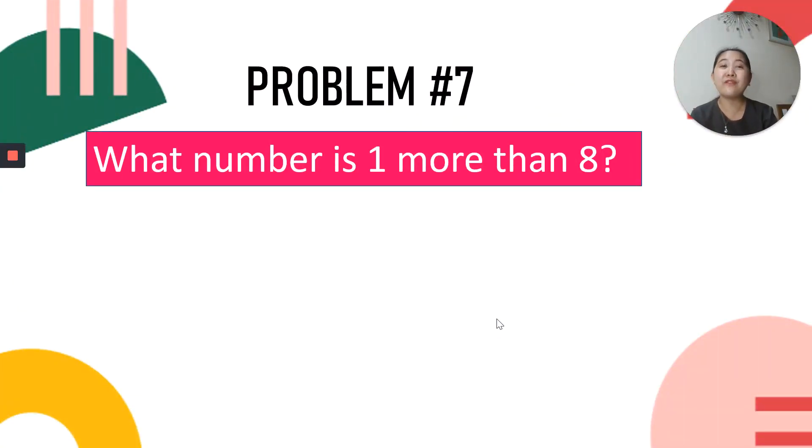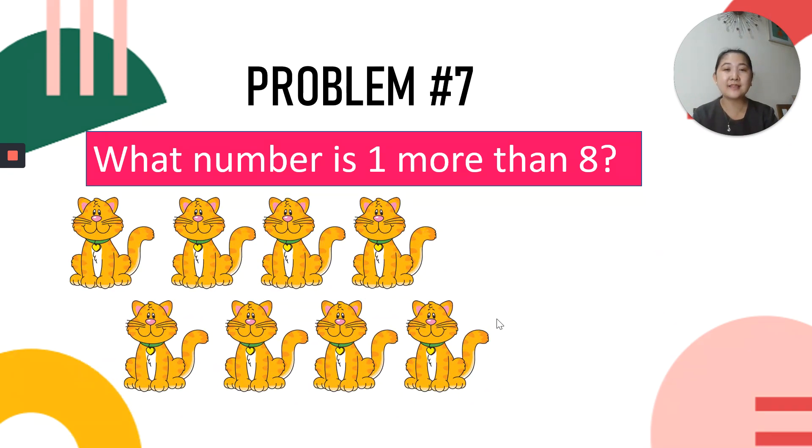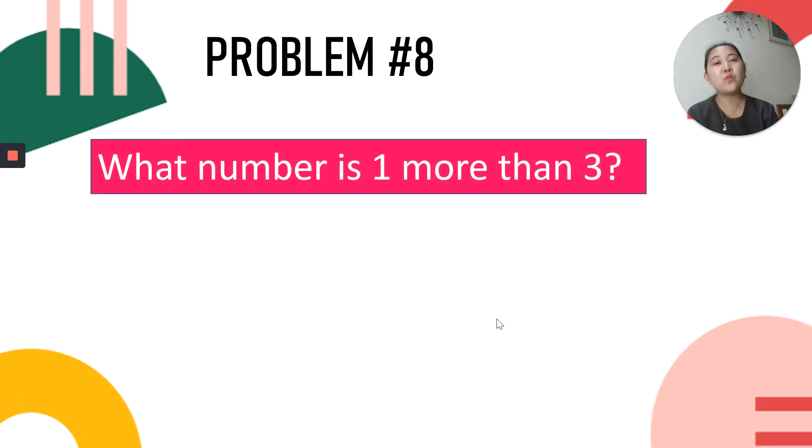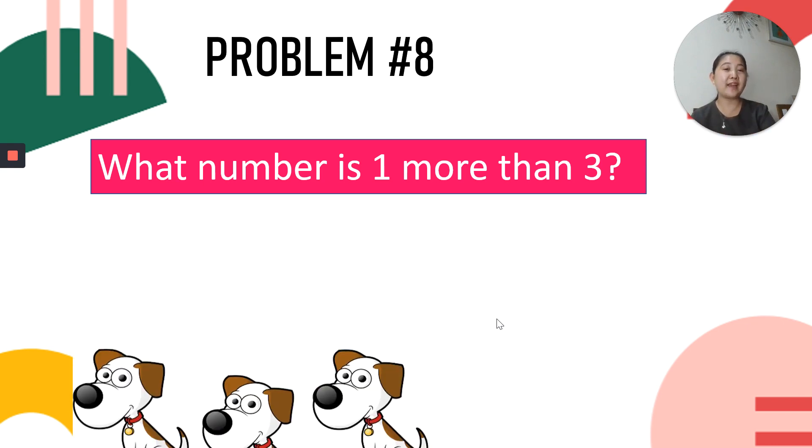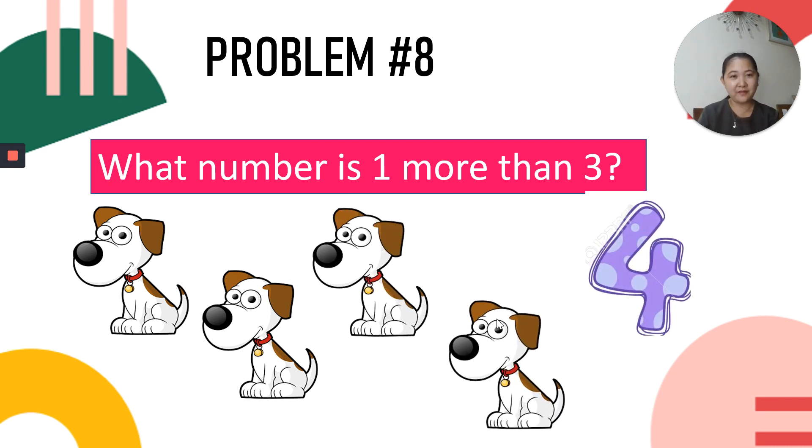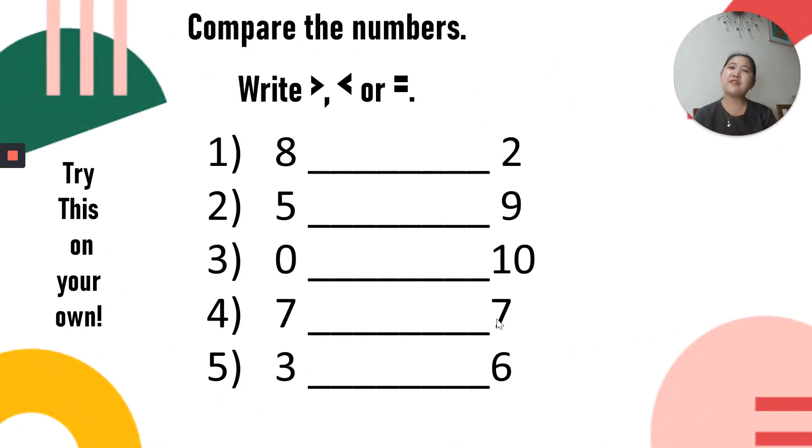How about this? What number is one more than 8? So we have 8 cats and we will be adding one more cat. So how many cats are there in all? 8 cats, one more than 8. What's next after 8 when you count? Yes, it's 9. Very good. So there are 9 cats. There's another problem, problem number 8. What number is one more than 3? So you have 3 fingers and then another one finger. How many fingers are there? I know you got it right. It's like 3 dogs and add another one dog, there are 4. Very good.